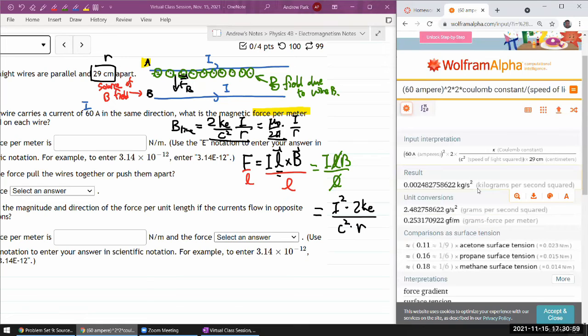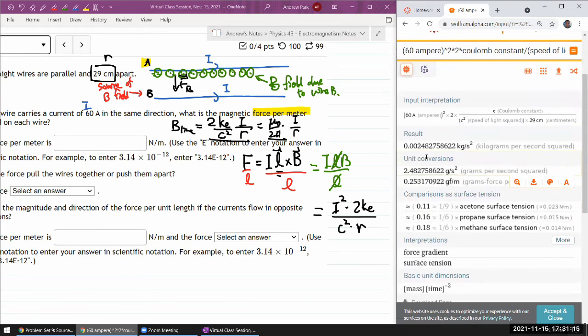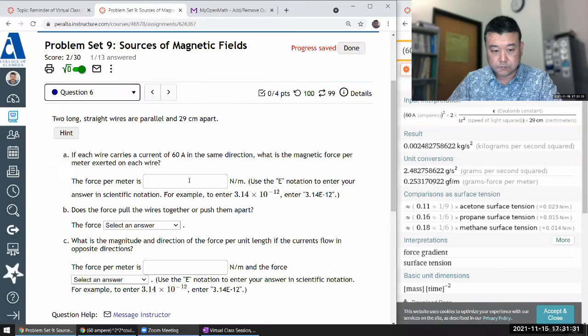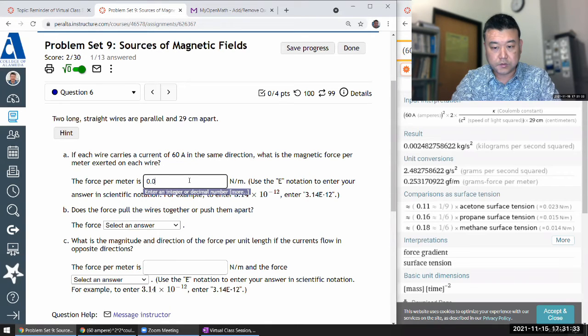I hope - oh right, it's not going to give me newtons, it's going to be newton per meter. So kilogram per second squared, I think that is newton per meter. Yeah, newton will have a meter per second squared. So it's 0.00248 newton per meter. 0.00248 newton per meter.